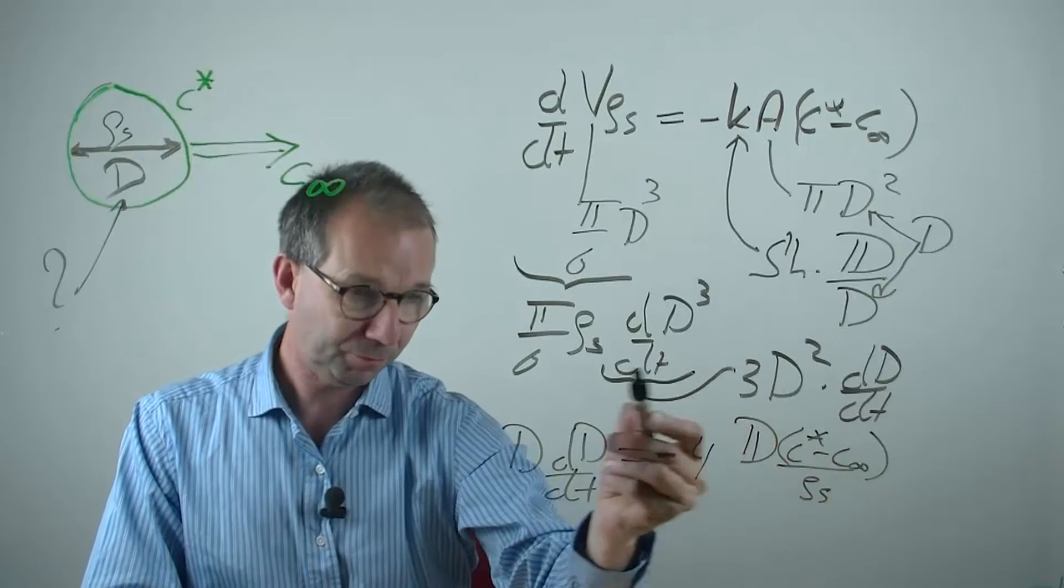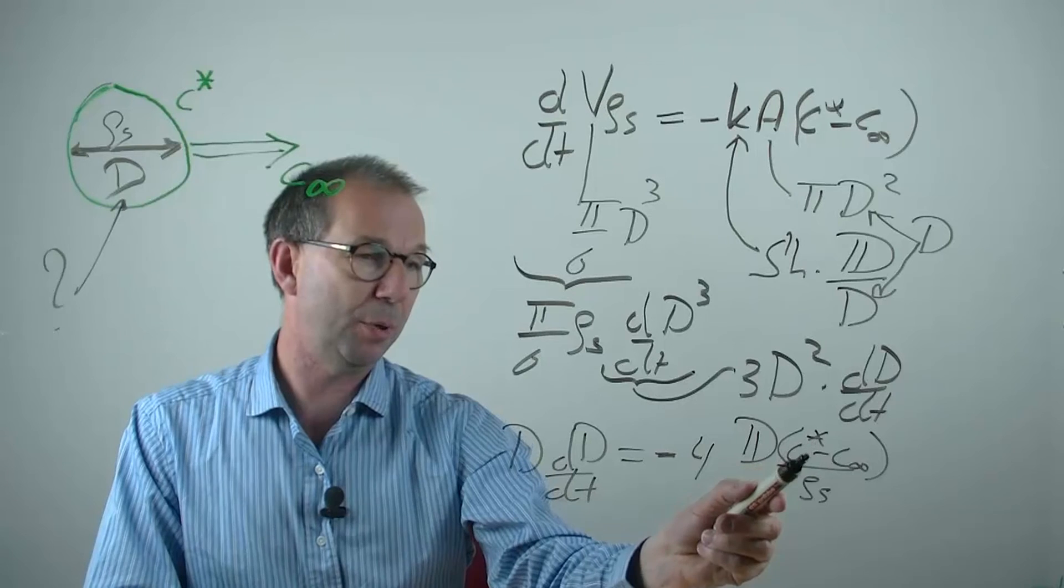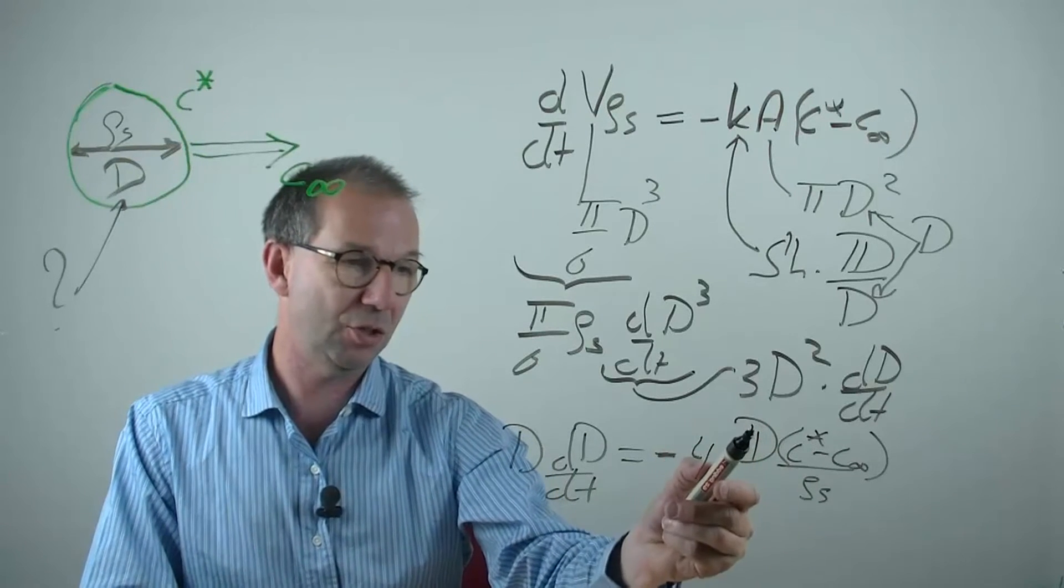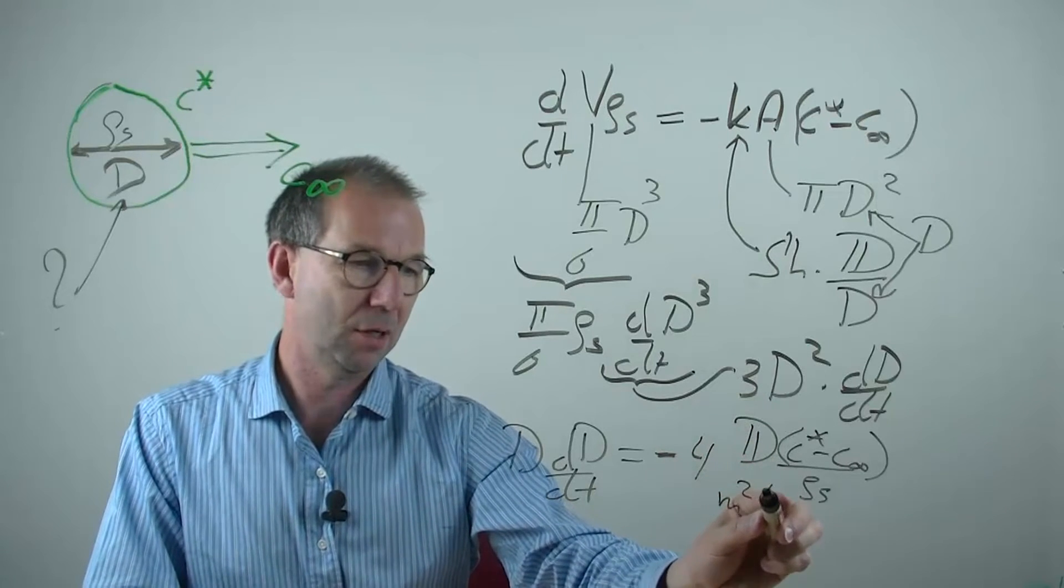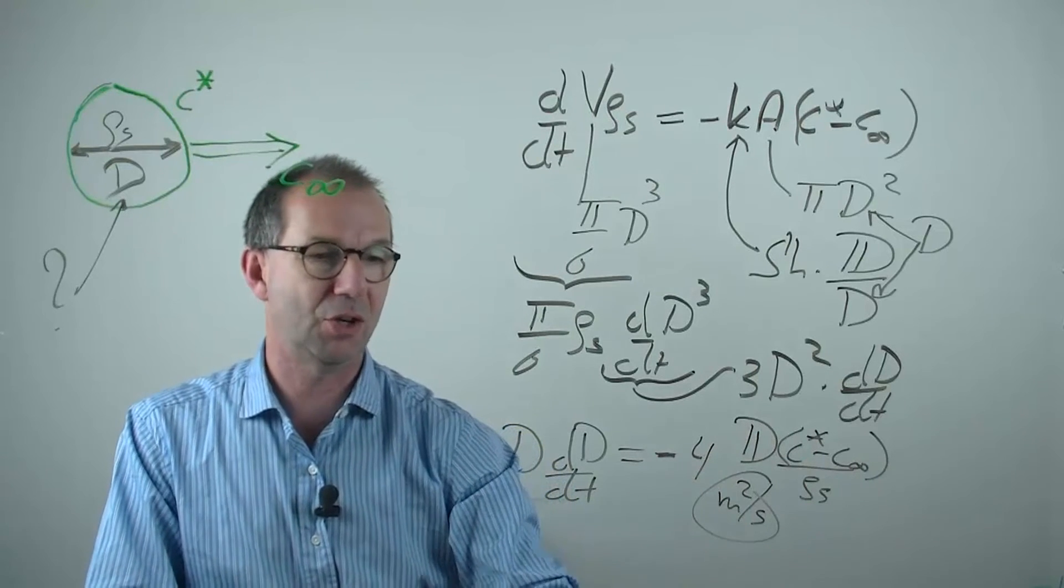And then obviously, I need to check whether this is dimensionally correct. Concentration in kg per cube over density in kg per cube. So this is dimensionless. Dimension of D, meter square per second. That's all dimension wise on the right hand side.